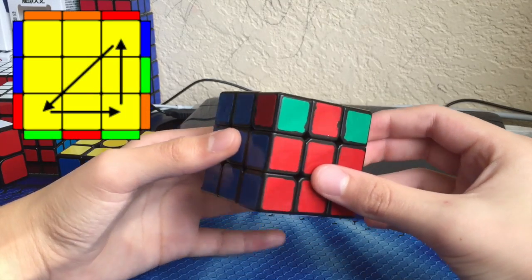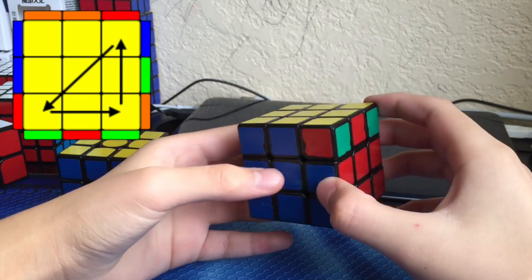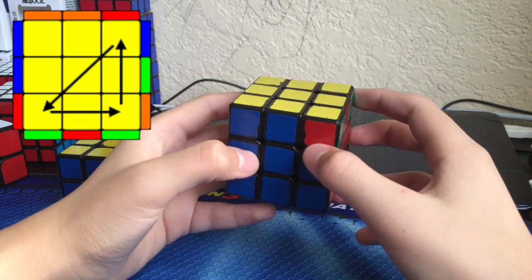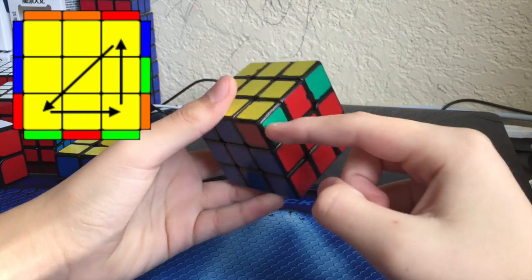The next case is the second A-perm, which is the counterclockwise version. It's basically the same thing, you just have to cycle them counterclockwise like that as you can see.